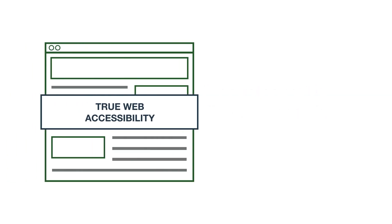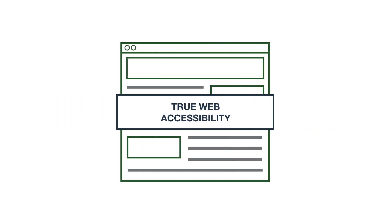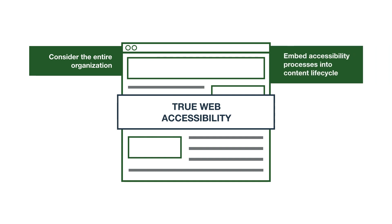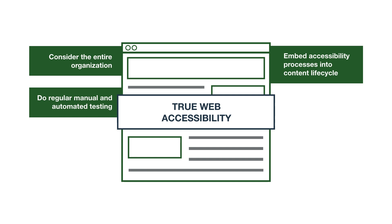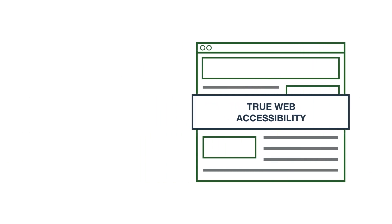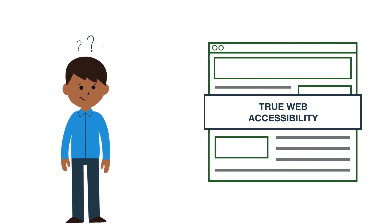It is possible to incorporate web accessibility into your organization in a way where your websites are accessible and compliant. But if you're here, you probably recognize that true web accessibility is more than a one-and-done project. True accessibility means considering the entire organization, embedding accessibility processes into the content lifecycle, doing regular automated and manual testing, getting leadership support, and the list goes on. Achieving this can feel like a complex problem — it might be unclear where to start or the steps to take to get there.